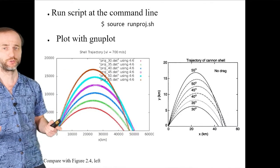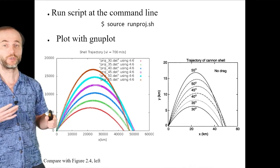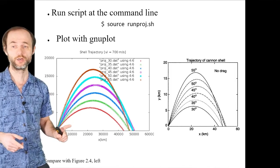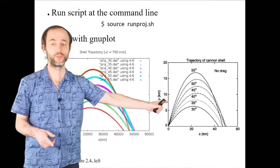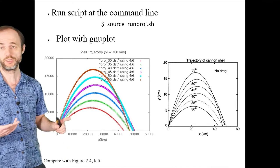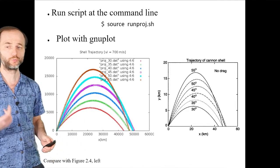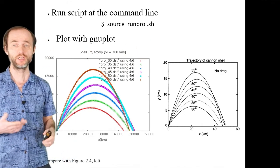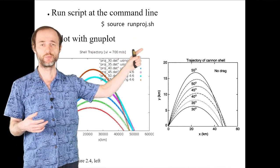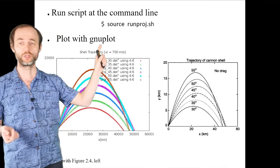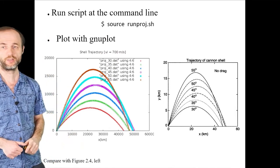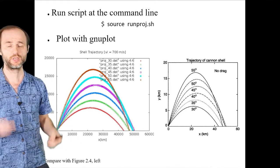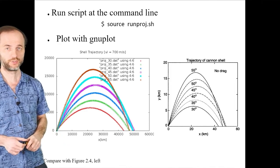By varying the angle while keeping velocity constant, we can compare our results to what the book gets (figure 2.4, left panel), and there is very good agreement between the trajectory shapes. To run the script, type dot-slash followed by the script name (making it executable first), or use the source command with the filename. The plot here is done with gnuplot; for a prettier plot you can do the same thing in Python.